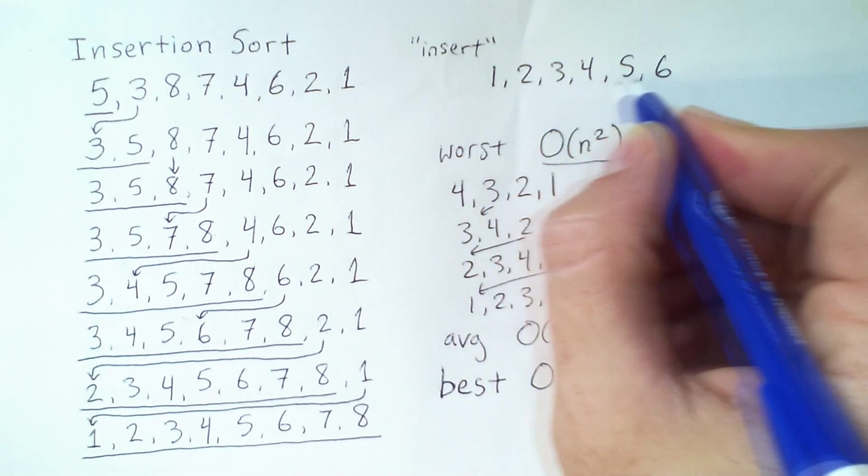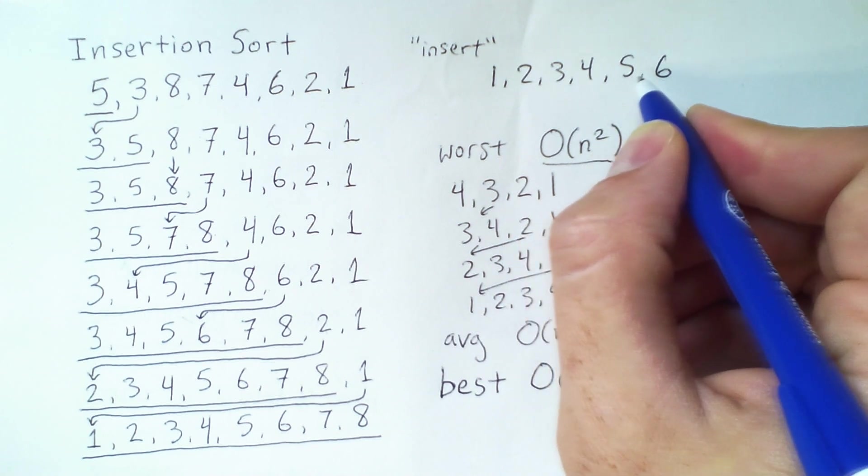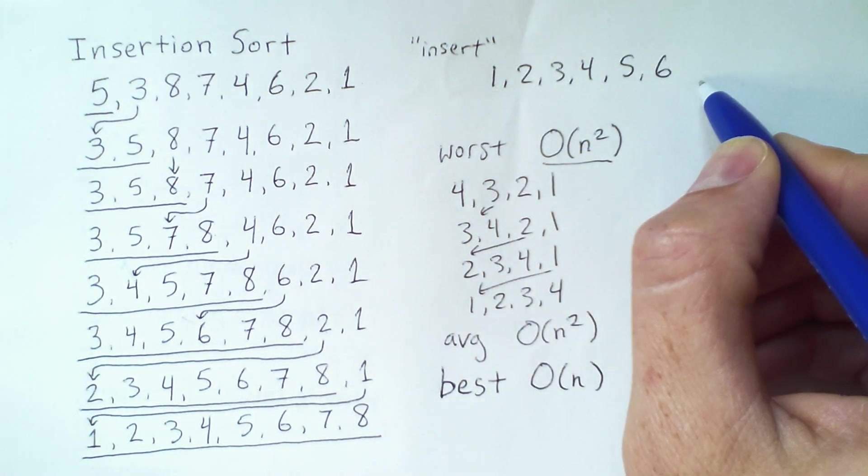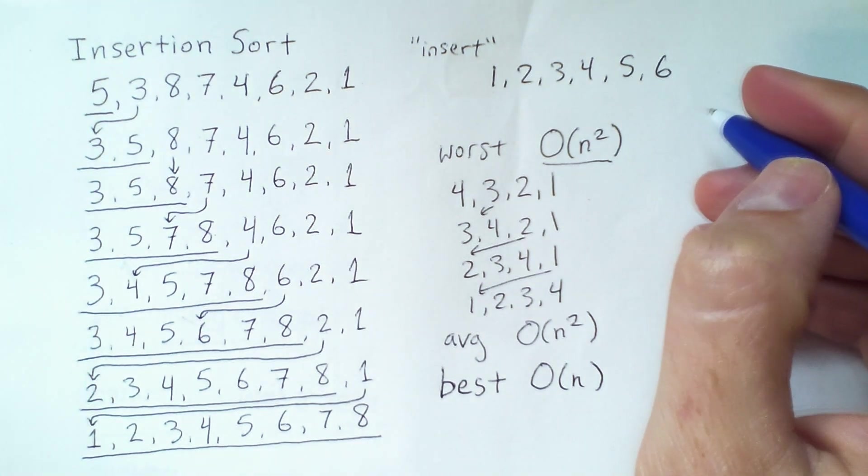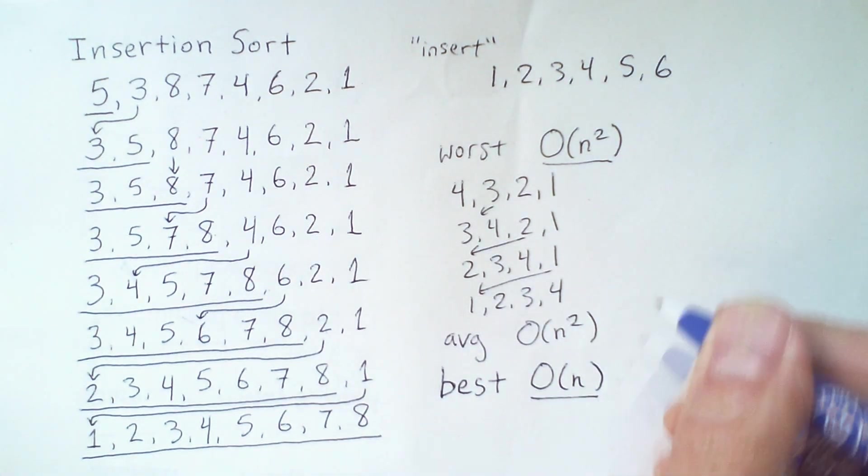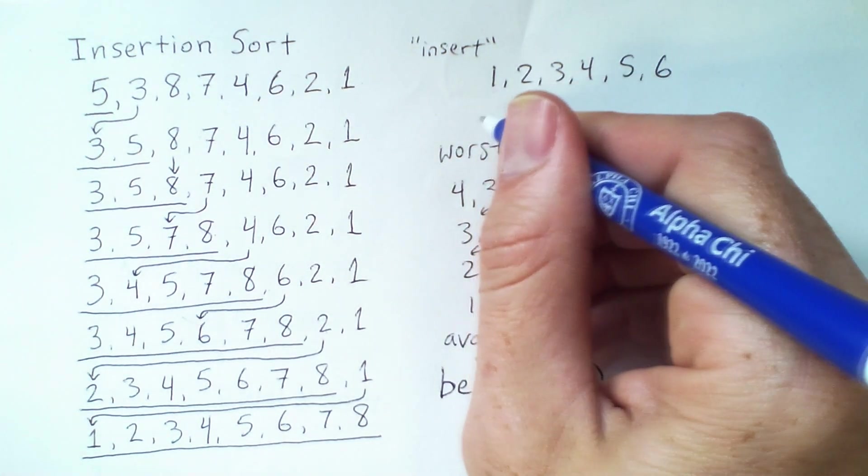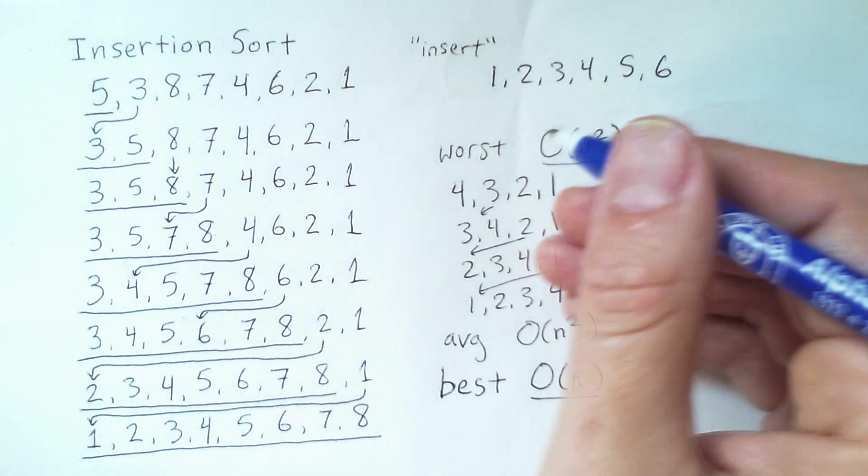Check the 5. No shifting. Check the 6. No shifting. So all I had to do was loop through the array and check each element once, hence O of n. I never had to shift anything back. That's where the extra work comes in.